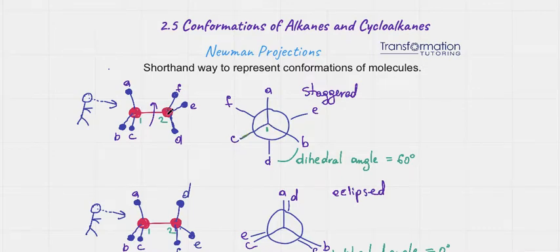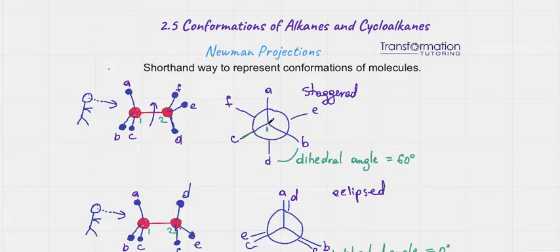Carbon number two is directly behind carbon number one. So if you're staring at carbon number one, you will not see carbon number two because it's hiding behind. Carbon number two is attached to D at the bottom, F on the left side, and E on the right side.